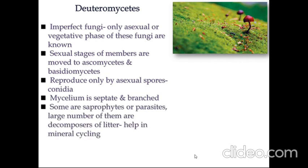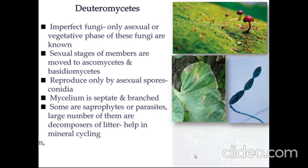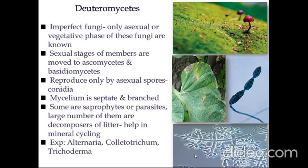Some Deuteromycetes are saprophytes or parasites, and a large number are decomposers of litter. They help in mineral cycling, keeping the ecosystem balanced. Examples of Deuteromycetes are Alternaria, Colletotrichum, and Trichoderma.